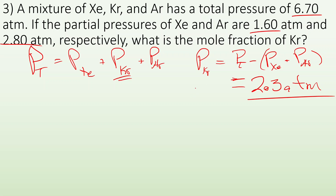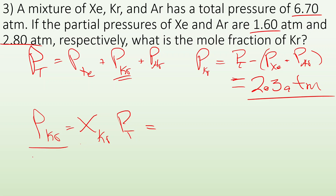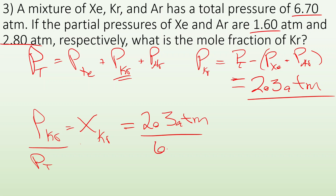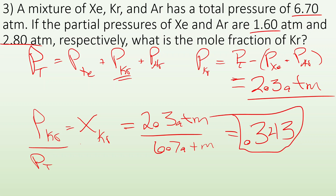Now if I want the mole fraction of krypton, I know that the partial pressure of krypton equals the mole fraction of krypton times the total pressure. So solving for the mole fraction: it's the partial pressure of krypton divided by the total pressure — 2.3 divided by 6.7 — and I get 0.343, a unitless number. That's the mole fraction of krypton.